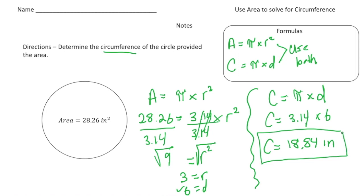Notice our label changed from inches squared to inches, because the circumference is the distance around the circle. So let's reflect on what we learned. You have to use the two formulas for area and circumference. You plug in what you know — we knew the area was 28.26. Then use the area formula first to solve for the radius. Once you have the radius, you can figure out the diameter, and then plug that diameter into the circumference formula to get the circumference.